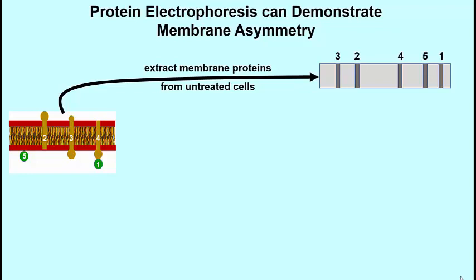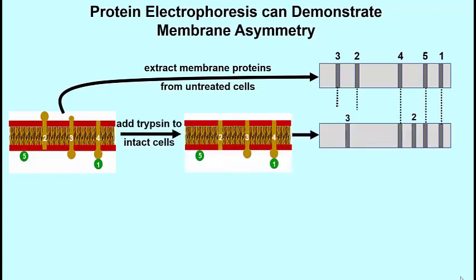Now let's treat this same cell with trypsin. So we'll add trypsin to intact cells, and then we'll extract the membrane protein. So you are now looking at intact cells that have been treated with trypsin, and the trypsin has digested parts of proteins 2 and 3, because that's all that's accessible to the trypsin in the outside environment of these cells. If we now extract these proteins and run them on a gel, we will see a gel that looks like the one that just appeared a second ago.